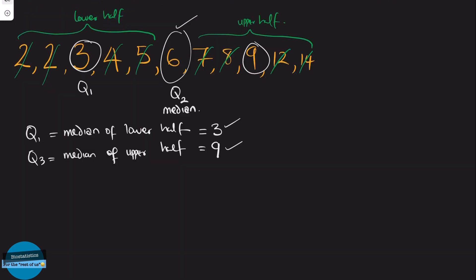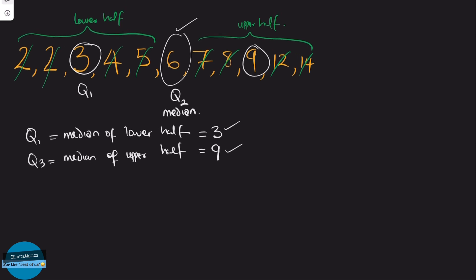Awesome. We will now go to our third step, which is to find the interquartile range. The interquartile range is the difference between the upper and lower quartiles. So IQR, that's the interquartile range, is equal to Q3 minus Q1. So we'll say IQR equals 9 minus 3, that's equal to 6. So our interquartile range is 6.